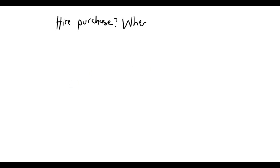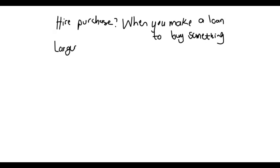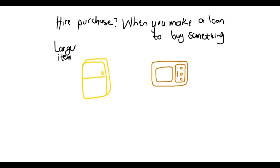In this video we will be looking at hire purchase. First things first, what is hire purchase? This is when you make a loan to buy something. In this case it could be for larger items most often — examples include things like appliances, refrigerators, furniture. You buy these types of items on credit, so you basically make a little loan, and this is when maybe you don't have enough cash.